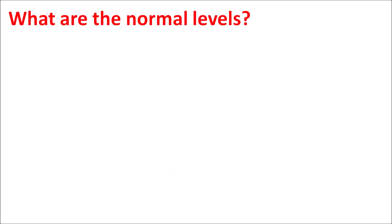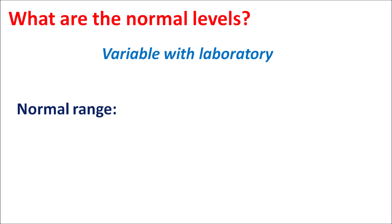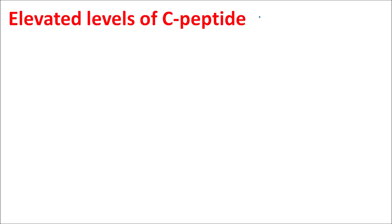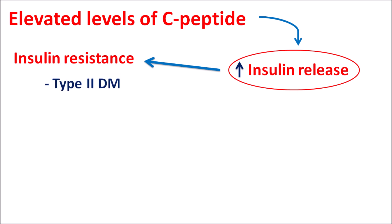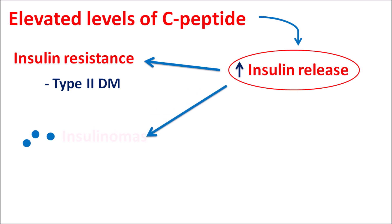The normal values of C-peptide vary with laboratory conditions, but generally the normal range falls between 0.5 to 2.0 nanograms per mL. Elevated C-peptide levels mainly indicate increased release of insulin, which may be due to insulin resistance, particularly in type 2 diabetes mellitus, where insulin is not working properly. More insulin is released to reduce glucose levels, resulting in increased C-peptide levels. Similarly, in patients with insulinomas, excessive insulin is released due to cancer of beta cells.